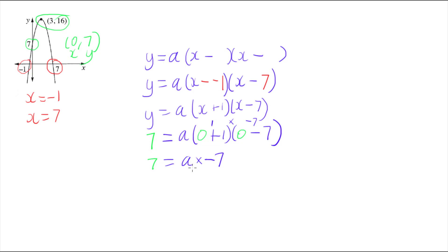And now I just need to get the a on its own, so I'm going to divide both sides by negative 7, so that I can cancel out that negative 7 there. And working that out, that gives me an a value of negative 1.